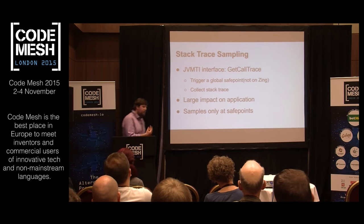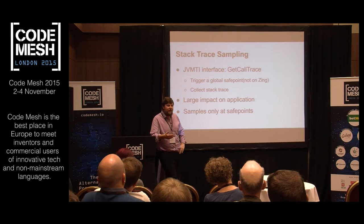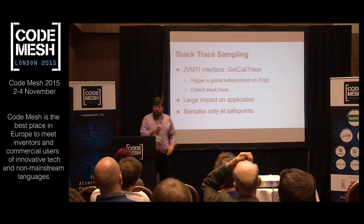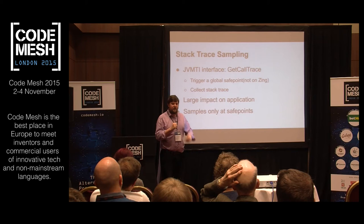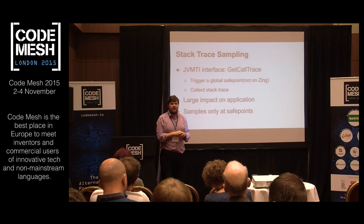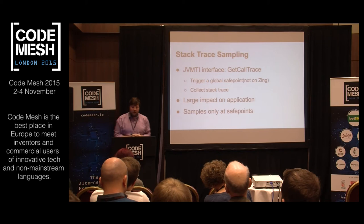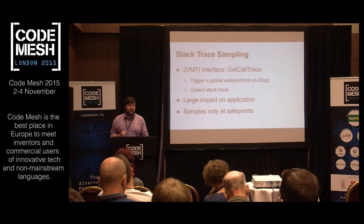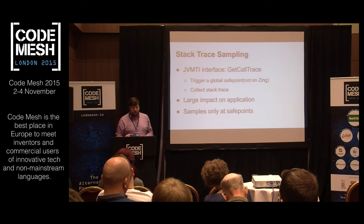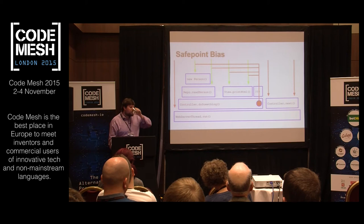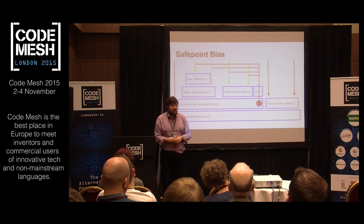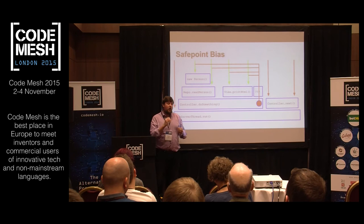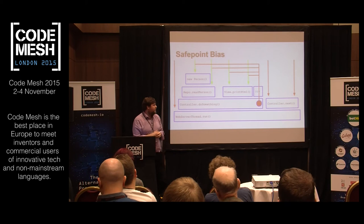How do people profile with the JVM? There's the JVMTI — the interface for writing profilers, debuggers, and tooling. It has a method called get call trace, which blocks, tries to stop the entire JVM, collects stack trace information, and returns it to the profiler. That process of stopping all threads has a large impact on the application, so it's an expensive sampling method. And it only samples at what are known as safe points.